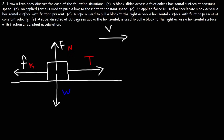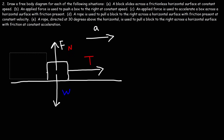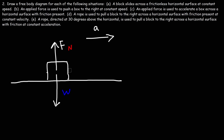For part E, a rope directed at 30 degrees above the horizontal is used to pull a block to the right across a horizontal surface with friction at constant acceleration. We're going to accelerate the block to the right, so the forces in the x direction will not be equal. If we're pulling the block to the right, friction will still be directed towards the left. Since we're pulling with an acceleration, friction is going to be less than the tension force — a relatively small fk to the left and a large tension force to the right at an angle.